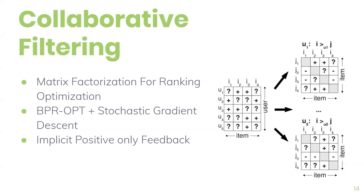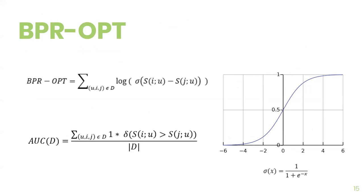We used a matrix factorization-based model using Bayesian Personalized Ranking, which tries to maximize the BPR optimization score by giving higher scores to items that were rated positively by users compared to those that were not. For evaluation, we use the AUC score, which counts the percentage of correctly ranked item pairs. A 100% AUC score means all positively rated items by the user are ranked higher than those not positively rated.